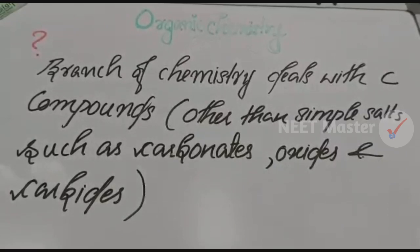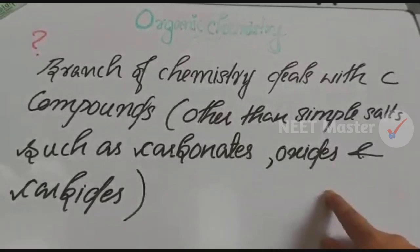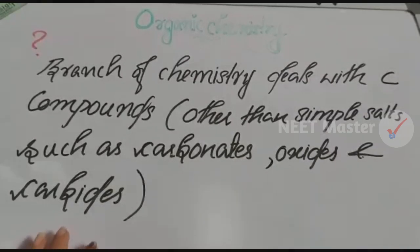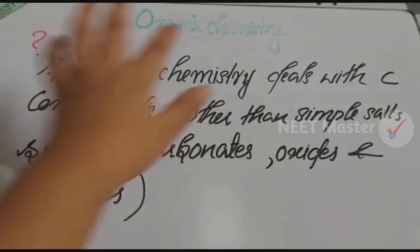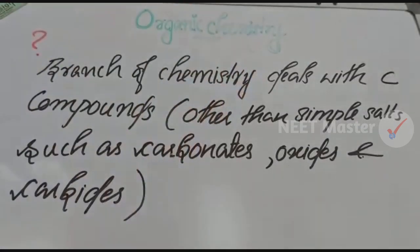What are the exceptions? Some of the excluded compounds are carbon oxides and carbides. These are carbon-containing compounds that are not dealt with in organic chemistry — the other carbon compounds are what organic chemistry deals with.